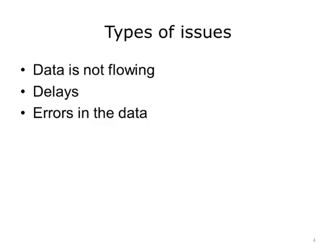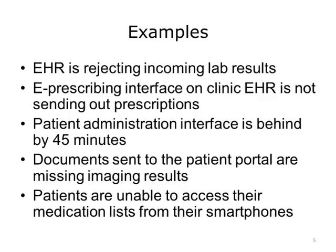There are three main types of problems that occur. The first is that data is not flowing or is not available on a query. The second is that there is a delay in data flow. The third is errors in the data. Examples of possible production issues include: the EHR lab results interface rejecting incoming lab results, the e-prescribing interface not sending out prescriptions, the patient administration interface being behind by 45 minutes, documents sent to the patient portal missing imaging results, and patients being unable to access their medication lists from their smartphones.